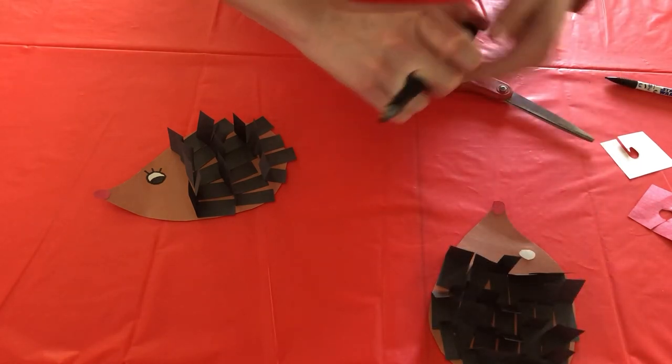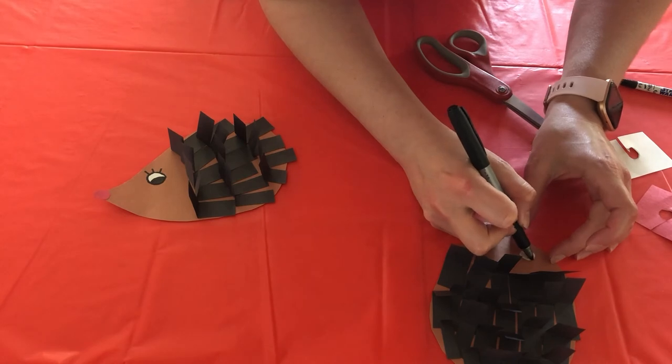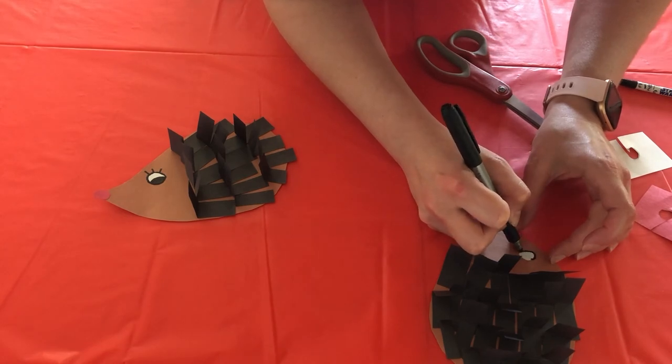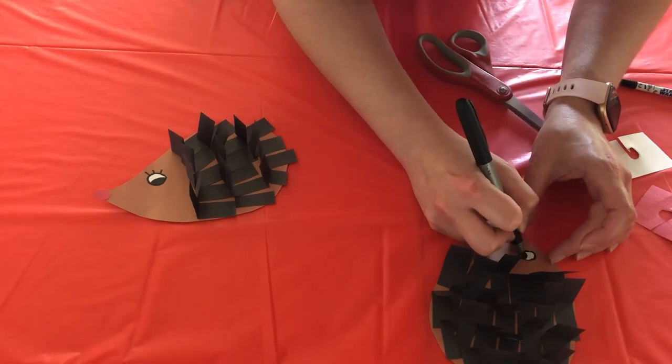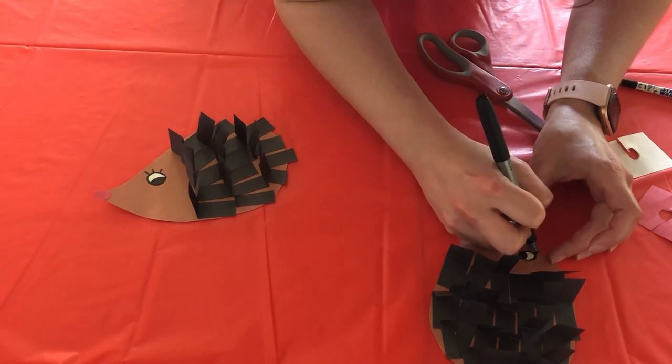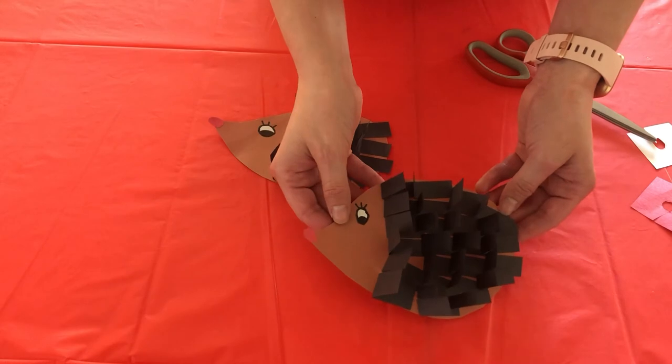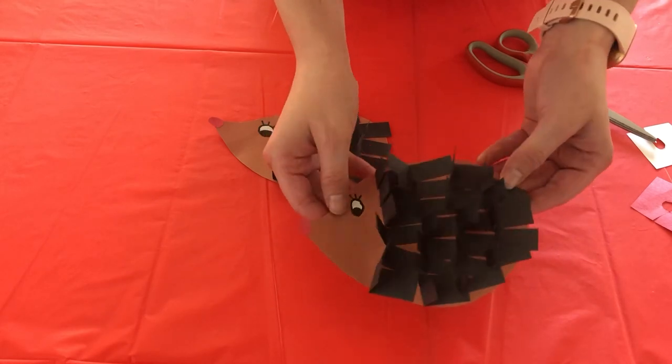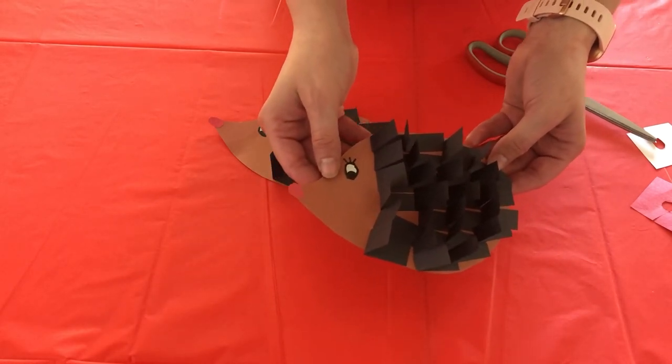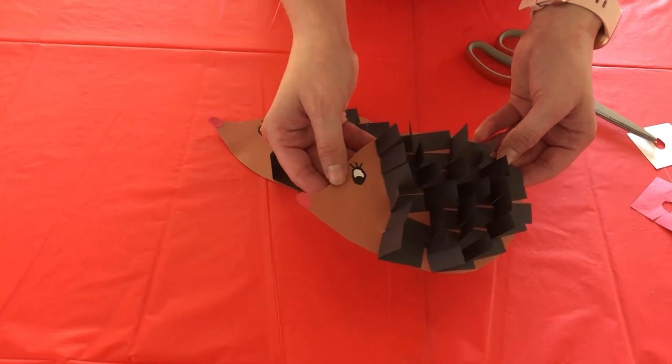And then for the eye, go ahead and trace a black outline. I'm going to give Miles some eyelashes here. And there you go. Now you have your own little paper hedgehog. I hope you enjoyed doing this craft with me today and I hope you have a wonderful World Wildlife Day.